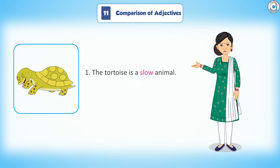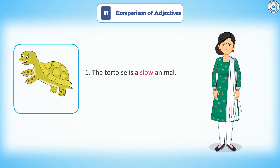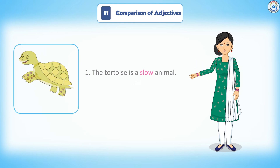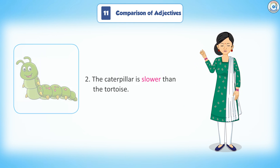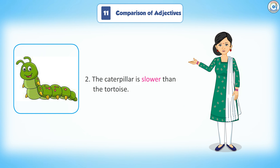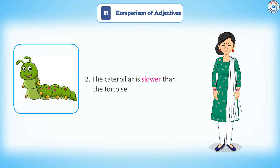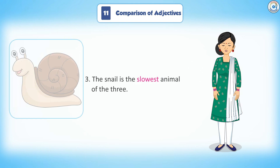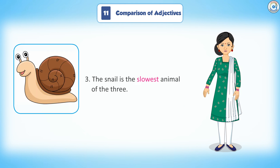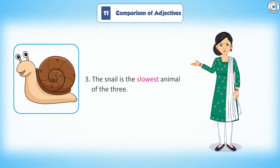The tortoise is a slow animal. The caterpillar is slower than the tortoise. The snail is the slowest animal of the three.